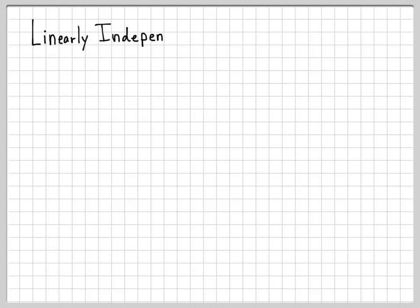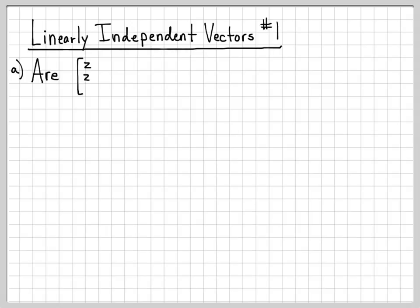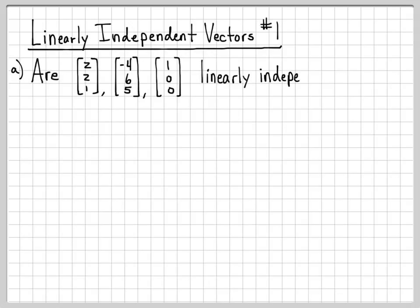We're going to look at a set of vectors and determine if they are linearly independent or not. We'll do this two different times. In this first part, we're going to look at the vectors (2, 2, 1), (-4, 6, 5), and (1, 0, 0). And we're asking the question: are these three vectors linearly independent?